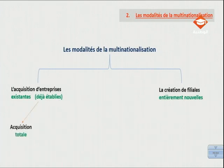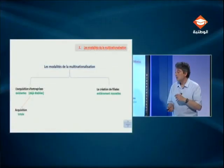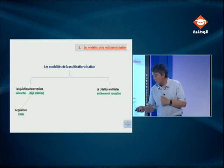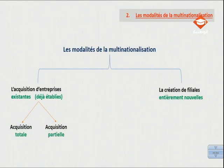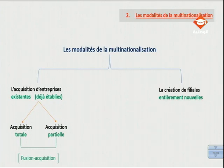Dans le cadre de l'acquisition d'entreprises déjà établies, la firme multinationale ou la société mère peut racheter totalement l'entreprise à l'étranger, c'est-à-dire une acquisition totale, ou faire en sorte de l'acquérir partiellement. L'entreprise peut ne pas avoir besoin d'acheter toutes les actions : l'acquisition peut être totale, lorsqu'il y a un rachat complet, ou partielle, lorsque l'entreprise achète 20, 30, 40 % des actions. Dans les deux cas, il s'agit d'une opération de fusion-acquisition. Parfois, il suffit même d'acheter juste 20 % des actions de l'entreprise visée.